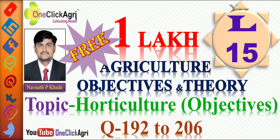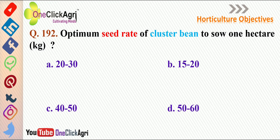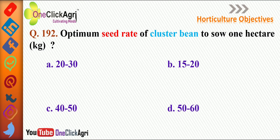Question number 192: The optimum seed rate of cluster beans to sow one hectare area in kg. The right answer for this question is 15 to 20 kg.